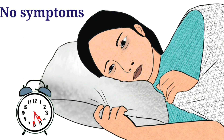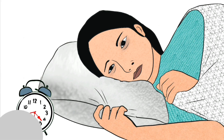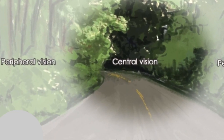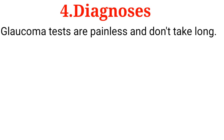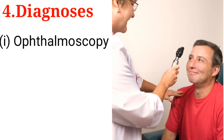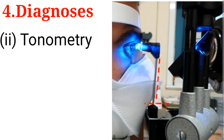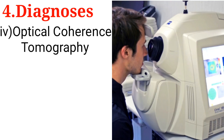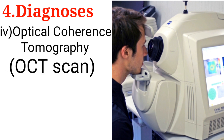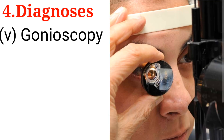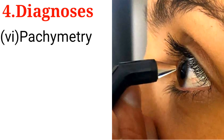Since glaucoma has no symptoms at an early stage, diagnosis can only be made when a physician performs regular eye check-ups, or at a late stage when the patient starts experiencing loss of side or peripheral vision. Glaucoma tests are painless and don't take long. Examples include ophthalmoscopy to evaluate the optic disc, tonometry to measure the IOP, perimetry or visual field test, and optical coherence tomography — OCT scan — used for objective assessment of optic nerve damage.